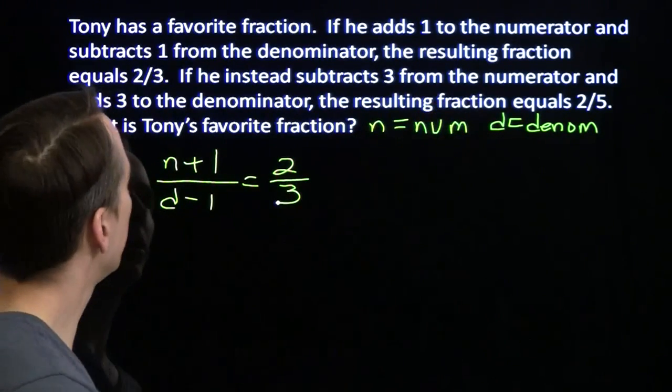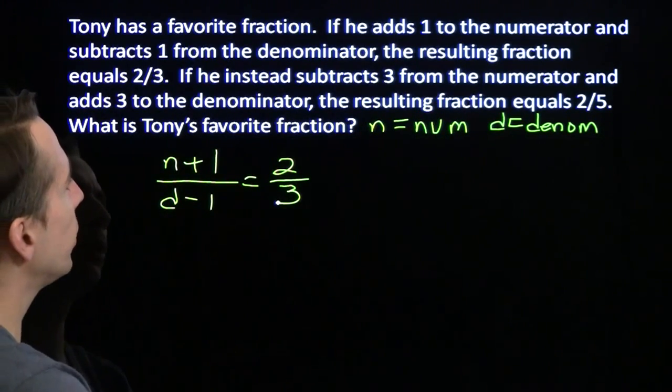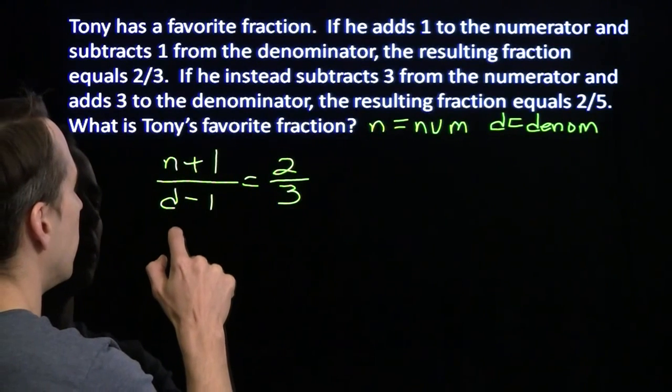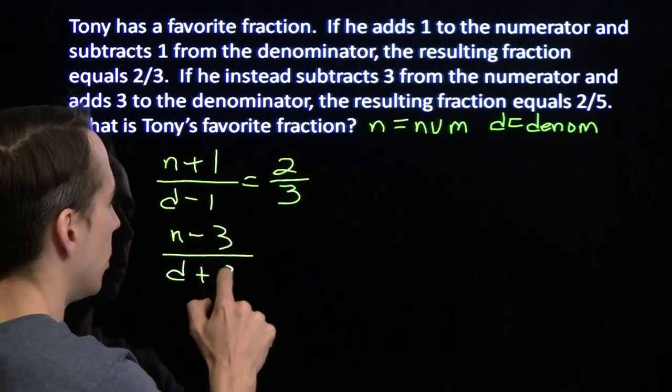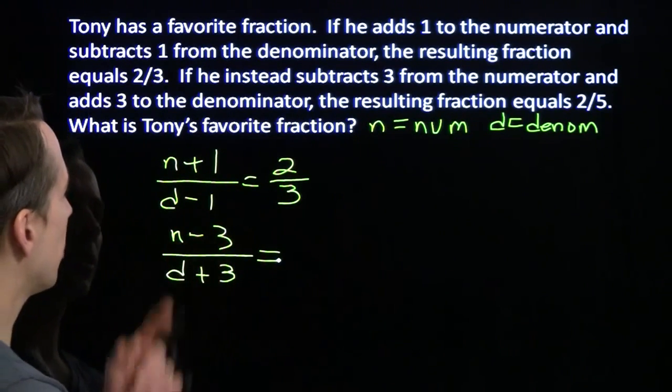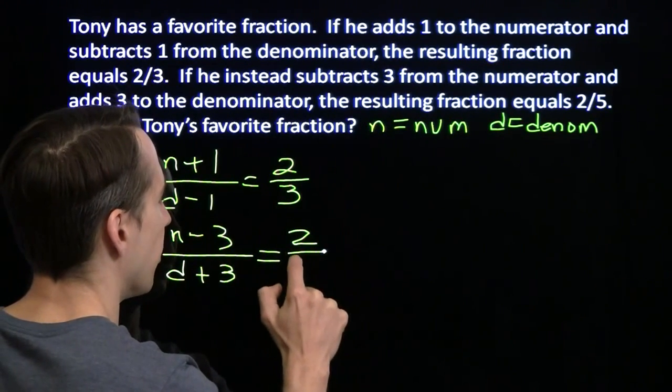And down here instead, he subtracts 3 from the numerator. Adds 3 to the denominator. Gets something that's equal to 2 fifths.